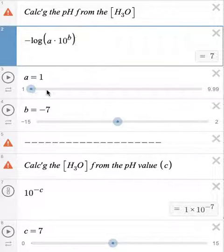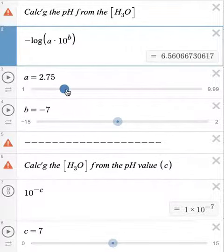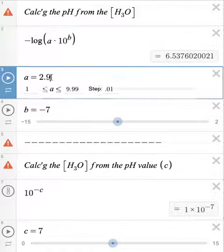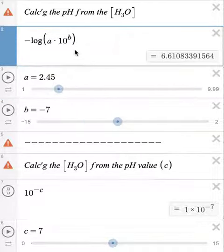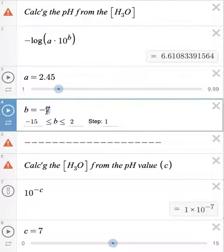I can do that by either using the slider right here and sliding it to 2.45 or even just highlighting this number and typing in 2.45. Then I have to type in negative 3 for B because I want to calculate the pH of a 2.45 times 10 to the negative 3.